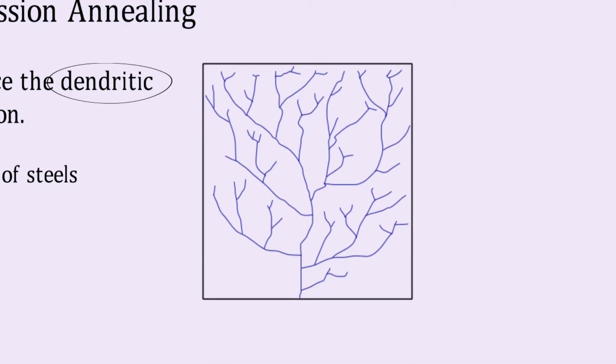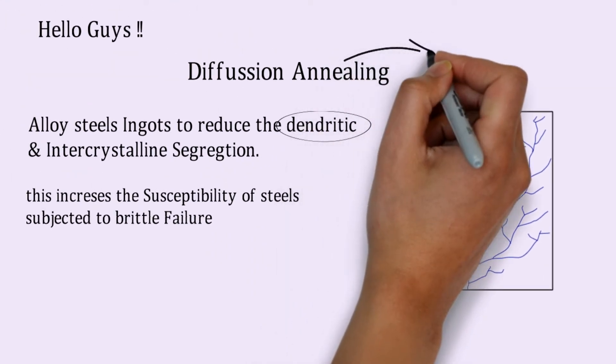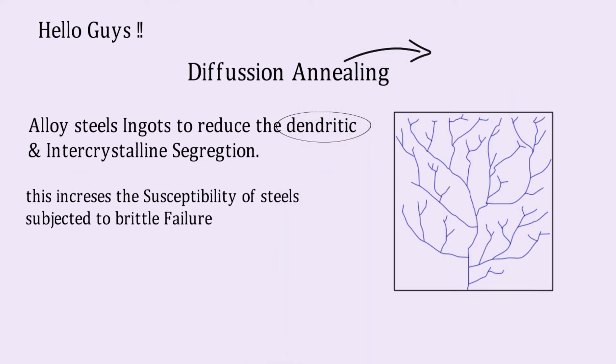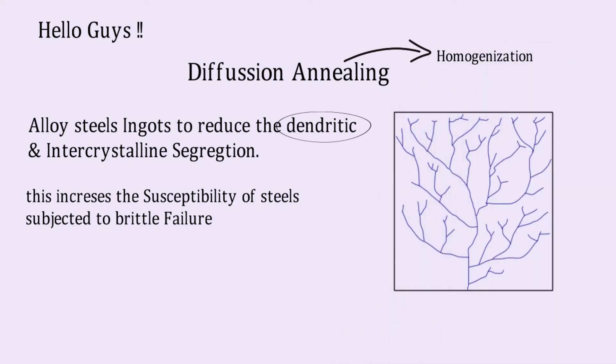Dendritic is nothing but having a branch-like structure, similar to trees. To reduce that, the diffusion annealing is carried out, which is also known as the homogenization of steels.